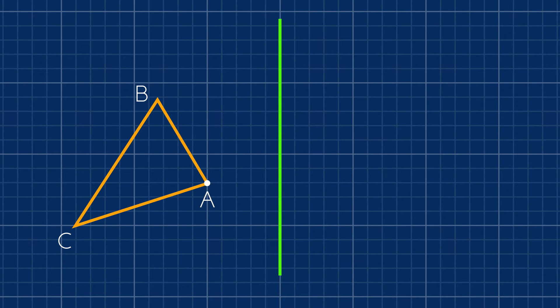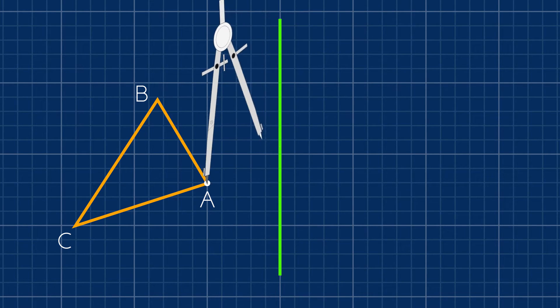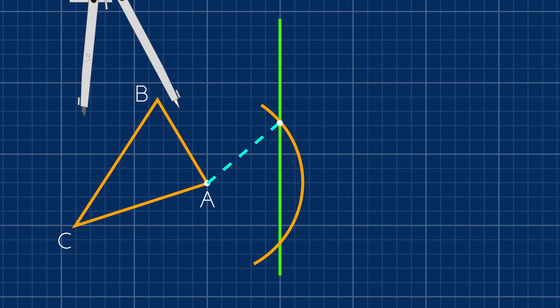Let's start with A. To get a point equidistant on the other side of this line, we'll open our compass and draw an arc that intersects our line. So this distance is the same as this distance. Oh, I get it.